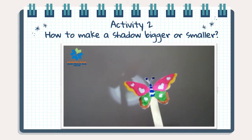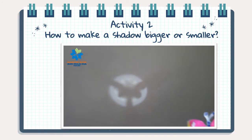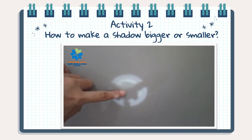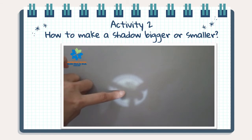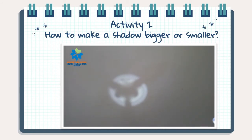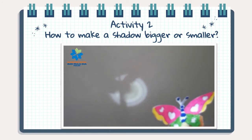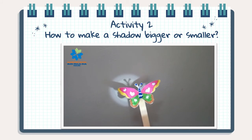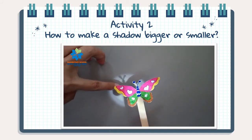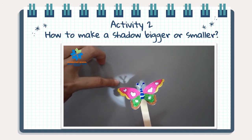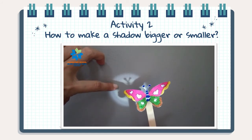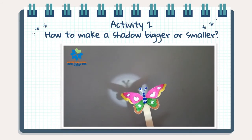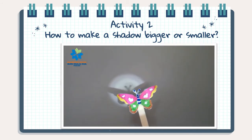One, move the puppet closer to the light source, like this. Two, look at the shadow on the wall. Does it become bigger and fuzzier? Apakah bayangannya membesar dan menjadi samar? Three, move the puppet farther away from the flashlight — jauhkan gambar dari center. Four, look at the shadow on the wall. Does it become smaller and sharper? Apakah bayangannya menjadi lebih kecil dan lebih tajam? Don't forget to take a photo of your bigger shadow and your smaller shadow.